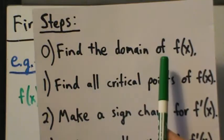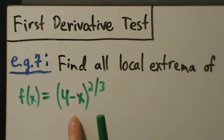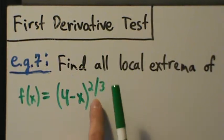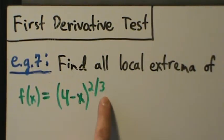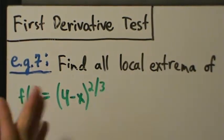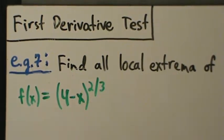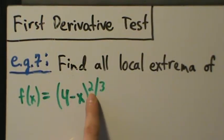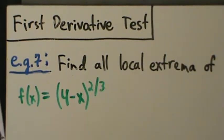Step zero: find the domain. We have four minus x, and then we raise to the two-thirds. That means square it and then take a cube root, or take a cube root first and then square it. Third roots — you can take the third root of anything; you can take odd roots of any number, even negative numbers. And squaring is okay with anything. So there are no domain restrictions here. The domain is all real numbers.